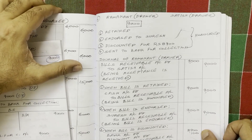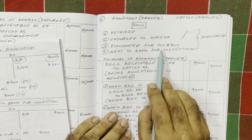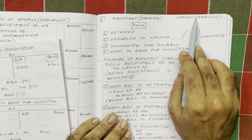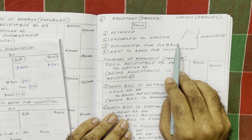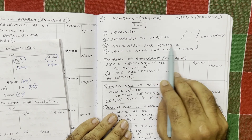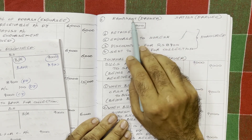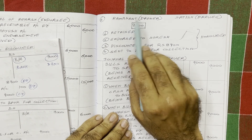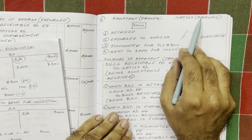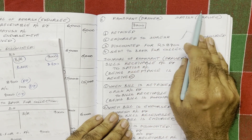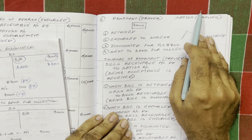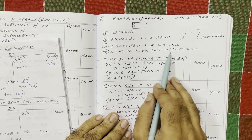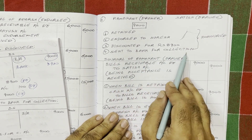On the due date, the bill is with the banker. The bank went to Satish and Satish honored the bill. This transaction is between bank and Satish — Ramakanth is not affected. Therefore, in Ramakanth's books, for honor of the bill, no journal entry is needed.